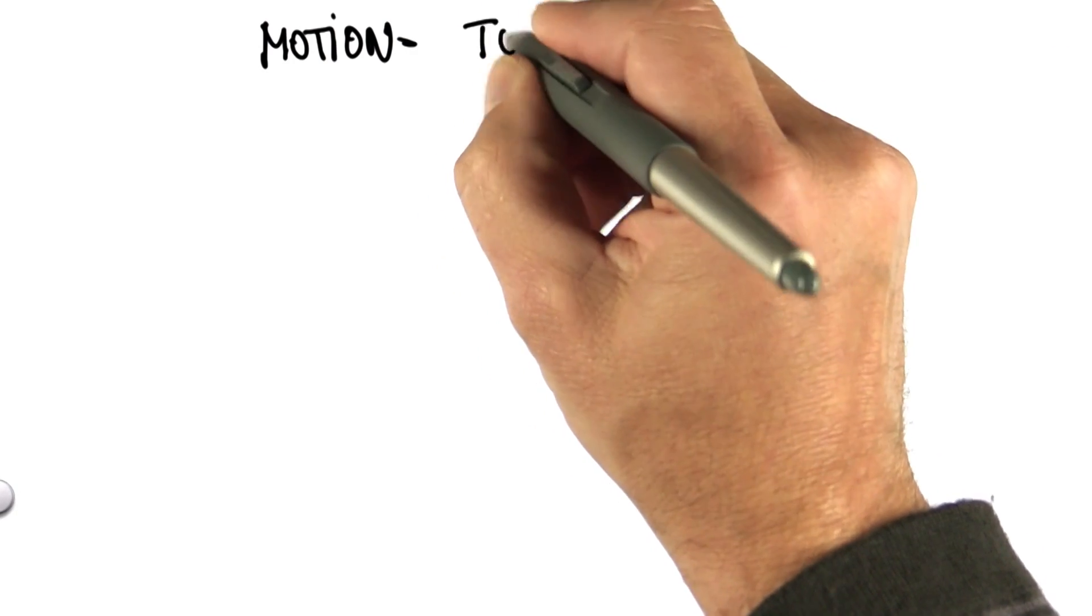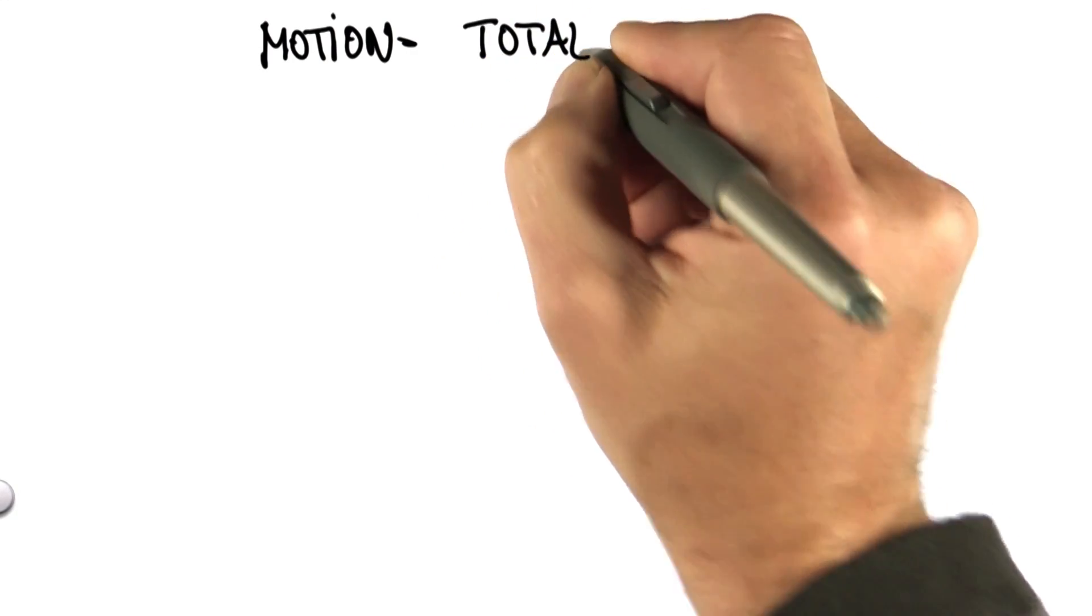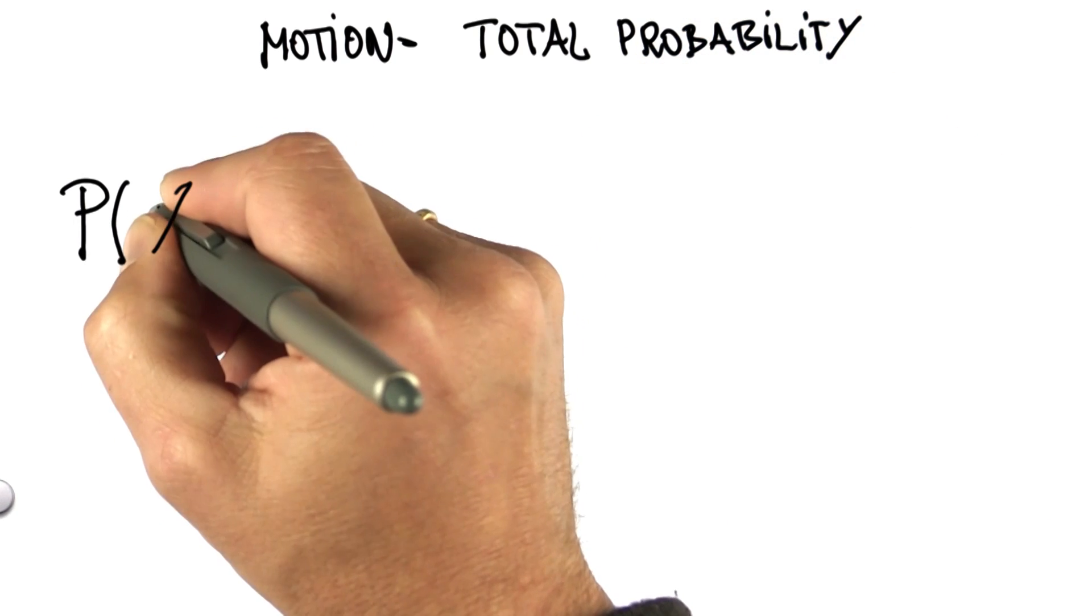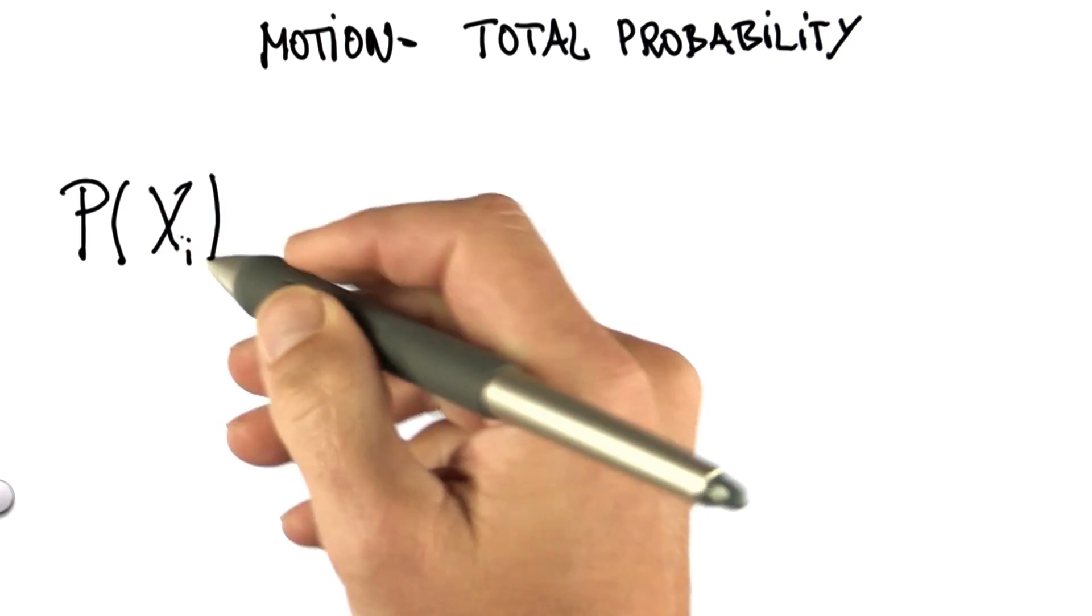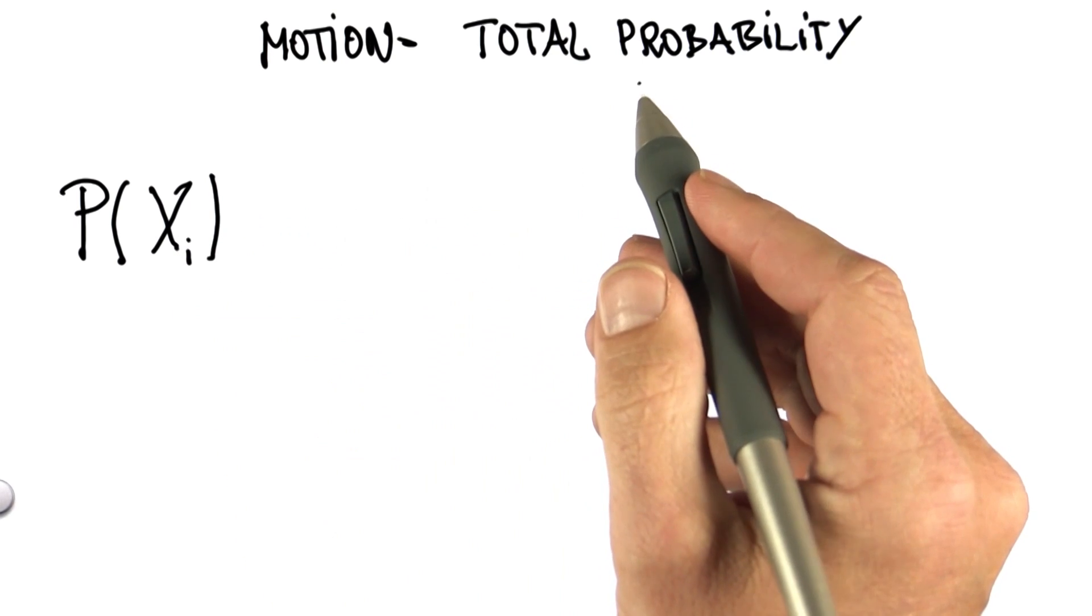So let's look at motion, which will turn out to be something we will call total probability. You remember that we cared about a grid cell xi, and we asked what is the chance of being xi after robot motion.